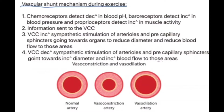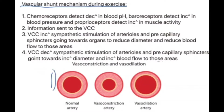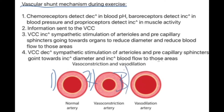Looking at the diagrams at the bottom: the first image shows a normal artery at rest. The middle image shows what the arterioles towards the organs look like during exercise — you can see the diameter has reduced, so there's less blood able to get there. And the third image shows what's happened to the arterioles going towards the muscles — a much wider diameter, so you can get loads more oxygen and nutrients going towards the muscles. That is it in diagrammatic format.